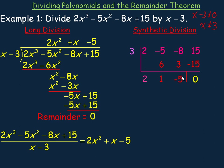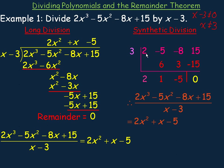What's to the right of the vertical line is the remainder — 0 in this case. The values 2, 1, negative 5 are the coefficients of the quotient: 2x² plus 1x minus 5. That's your answer. The 6, 3, and negative 15 correspond to the intermediate values in long division — they are the opposite coefficients of negative 6x², minus 3x, and the constant 15 that appeared there.